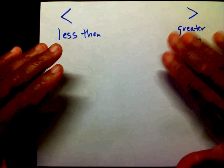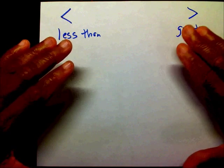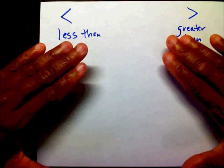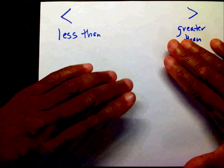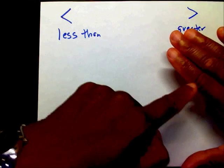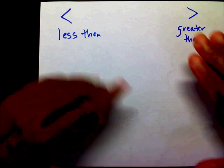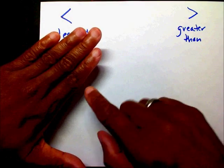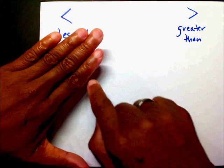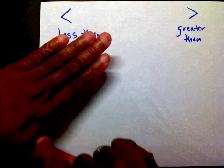Since this is my strongest hand — my right hand is my strongest hand — it also holds the greater than sign. Since this is my weakest hand, it holds the less than sign.